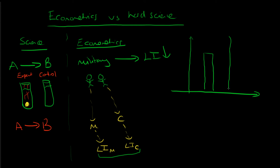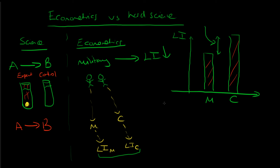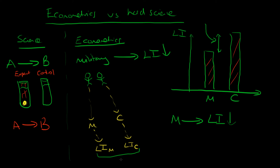Typically what we have in econometrics is historical data — we might have the lifetime income of a group of people who went into the military and compare that with the lifetime income of a group that remained civilians. By comparing these two averages, you might think naively that gives us an indication of the effects of military participation on lifetime income — that it might allow us to quantify that effect.